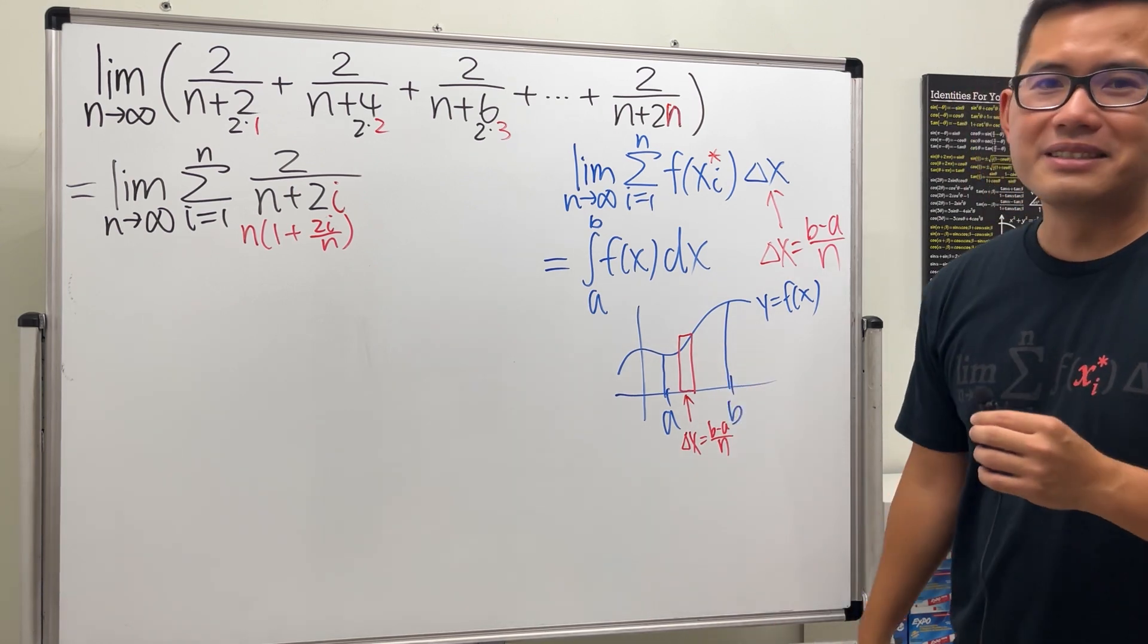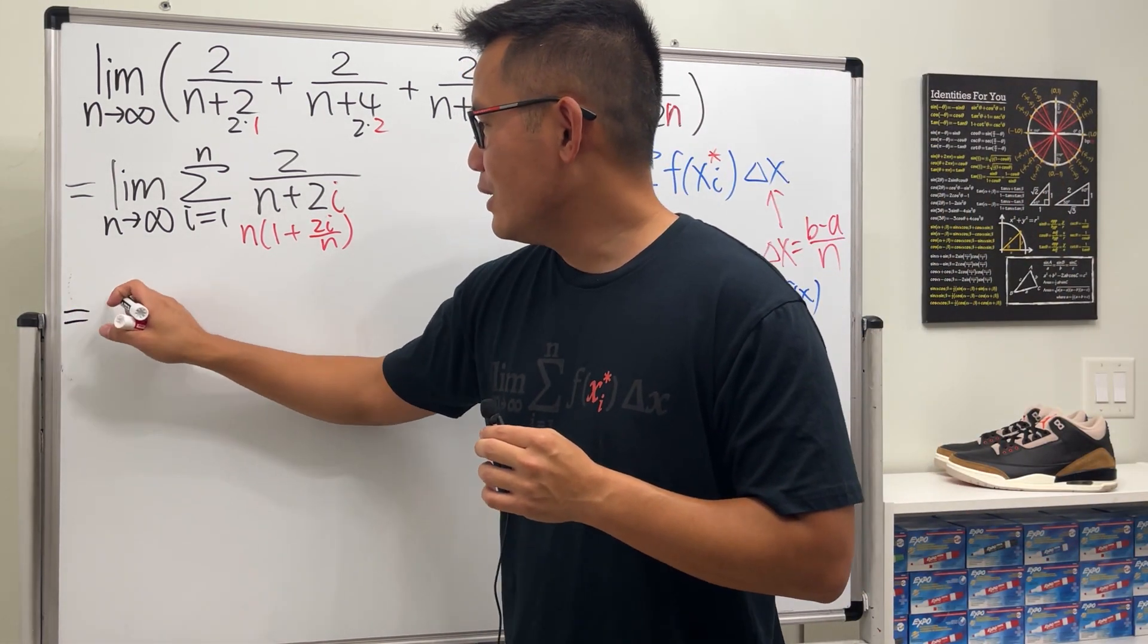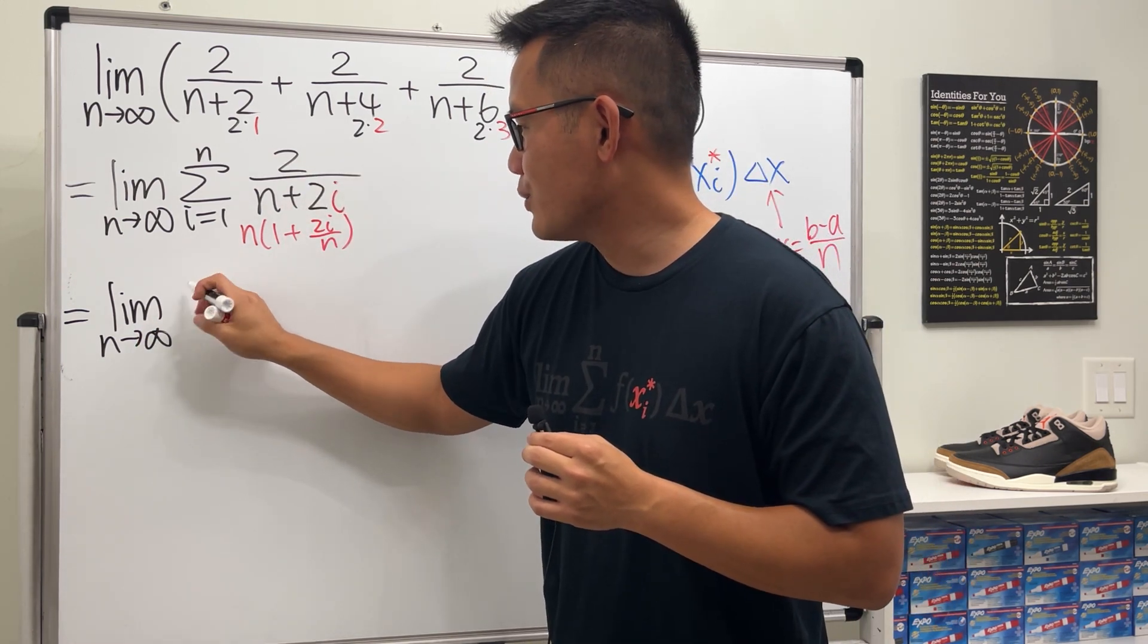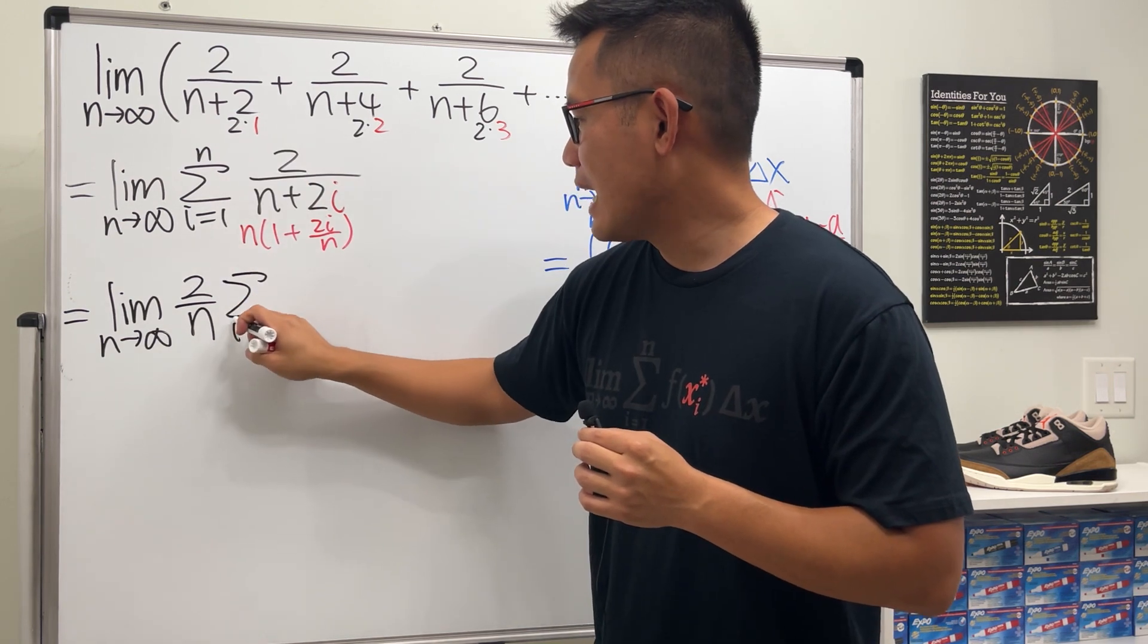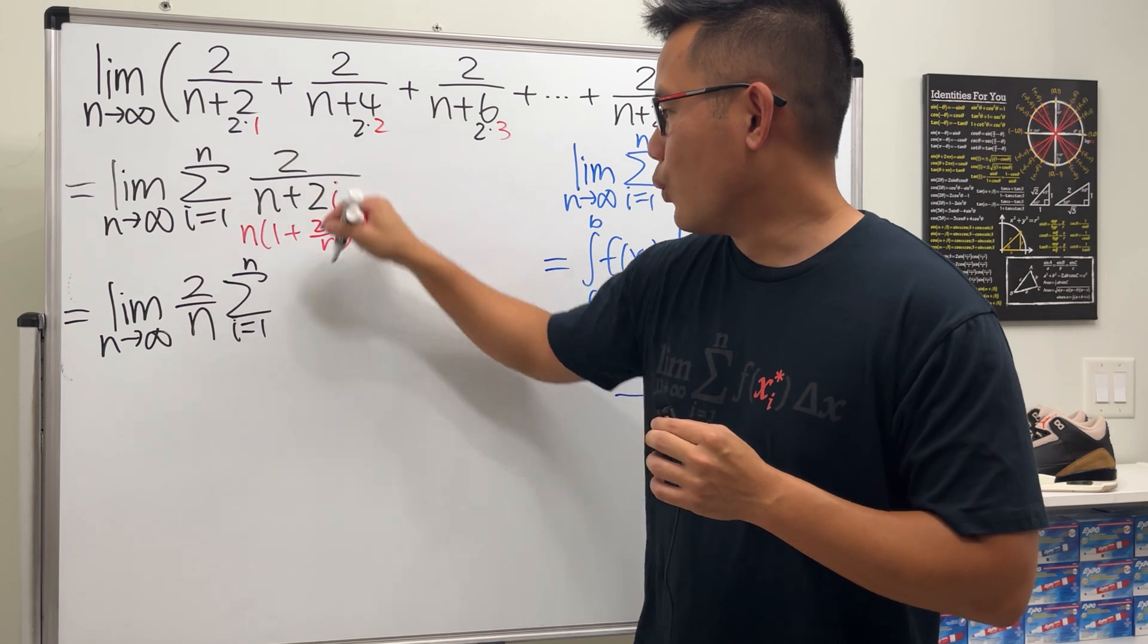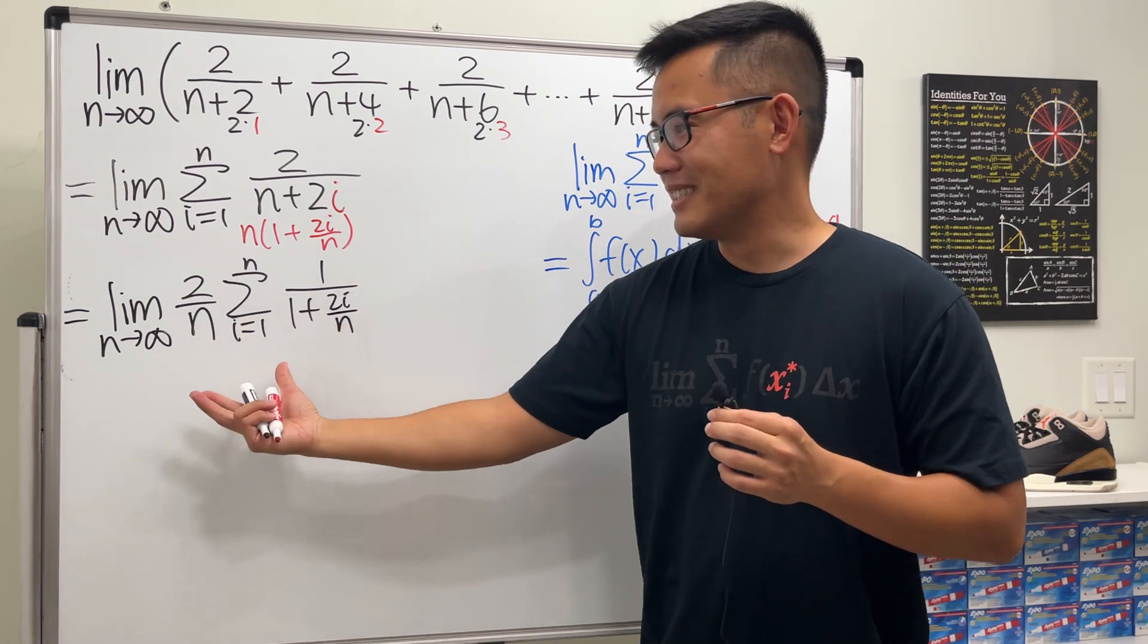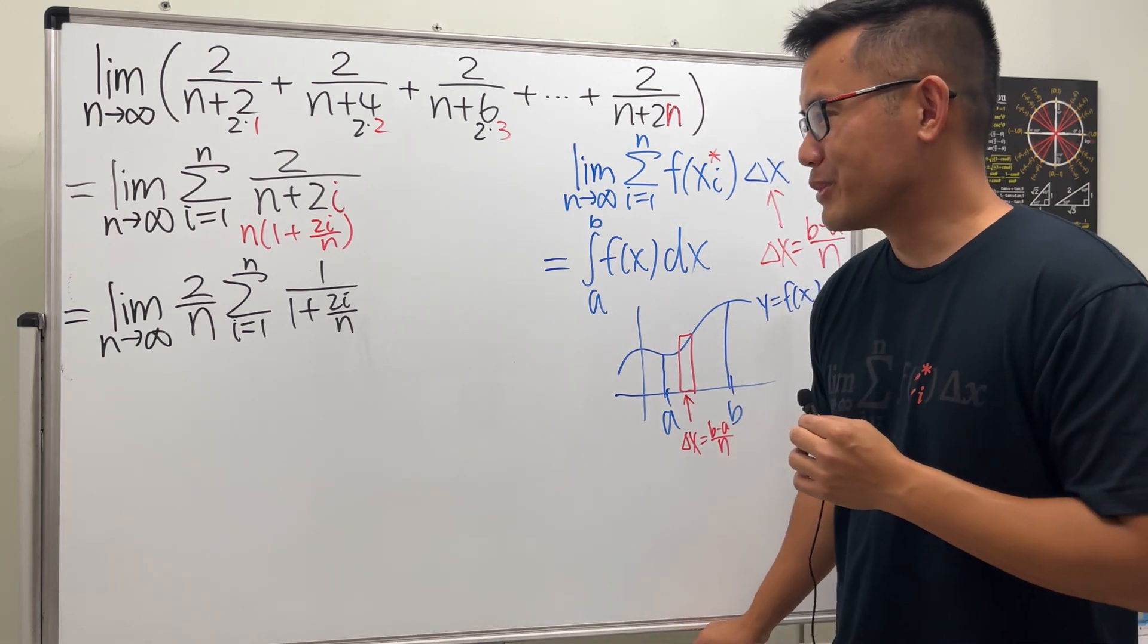It looks nicer somehow, more interpretable somehow. But I am going to show you both ways to write it. Either we write it as the limit as n goes to infinity, 2 over n, and then the rest, which is the sigma i goes from 1 to n, and then the rest is 1 over 1 plus 2i over n. I am not kidding. This is how the question has to be presented.